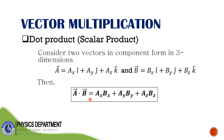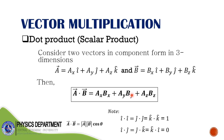So a · b = ab·cosθ, or equivalently ax·bx + ay·by + az·bz. By definition, î · î = |î||î|·cos0° = 1·1·1 = 1. Similarly, ĵ · ĵ = 1 and k̂ · k̂ = 1, since the angle between a unit vector and itself is zero and cosine of zero is one.